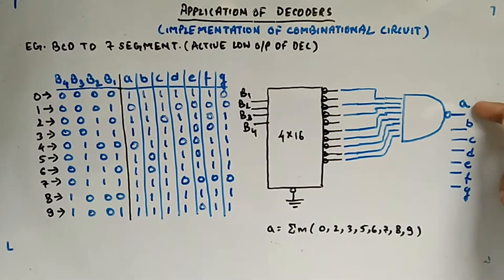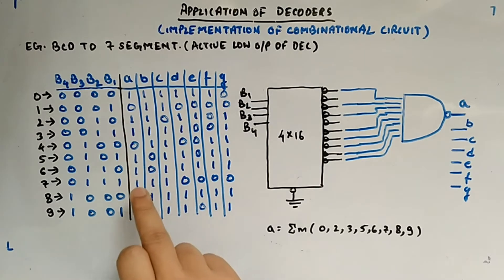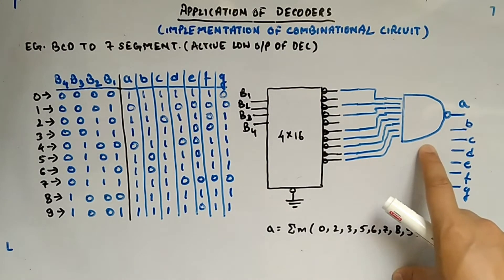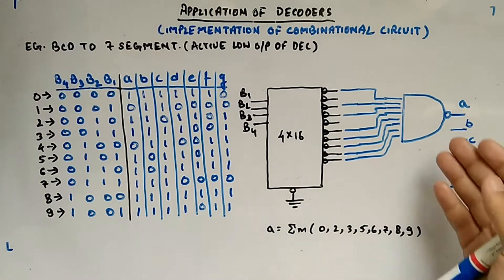If I am just giving you an example of A here, so A can be written as min terms 0, 2, 3, 5, 6, 7, 8, 9. Here you can see this column, so this is how you will write and if you have this, you can now use NAND gate. The only difference is instead of OR gate, you use a NAND gate.